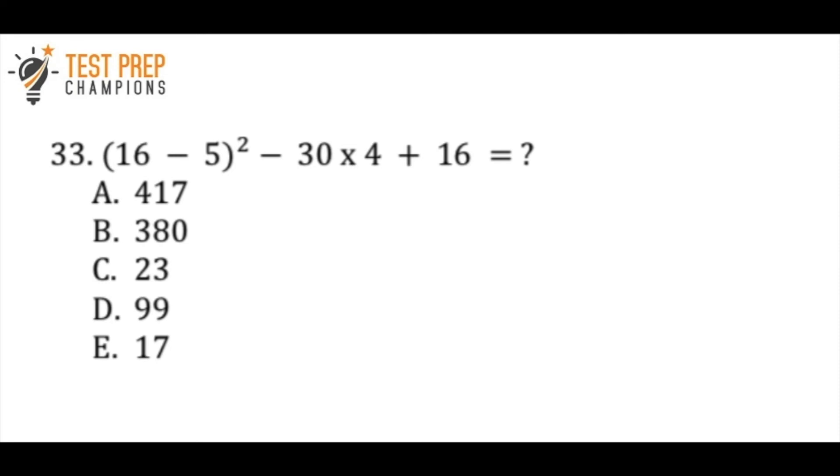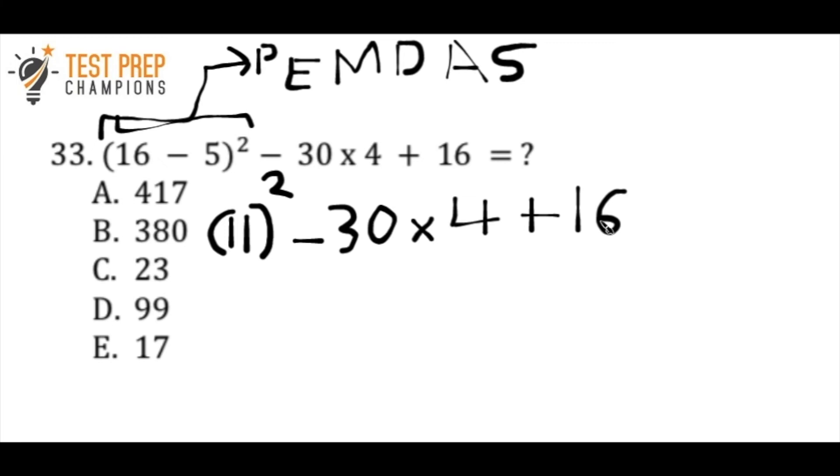Okay, here's the next question. So I'd like you to try to do this without a calculator. Pause the video, try this out, then we'll go over it, and this is an important one to know how to do. Okay, so to get this question right, you have to understand PEMDAS, or the order of operations rules. And so basically, what this tells us is that we want to start by with the P. We want to start with the P, which means parentheses. All right, so before we do anything else, we want to start by solving what's inside of the parentheses. So what's 16 minus 5? 16 minus 5 is 11. So let me rewrite the question now. So I'd rewrite it as 11 squared minus 30 times 4 plus 16.